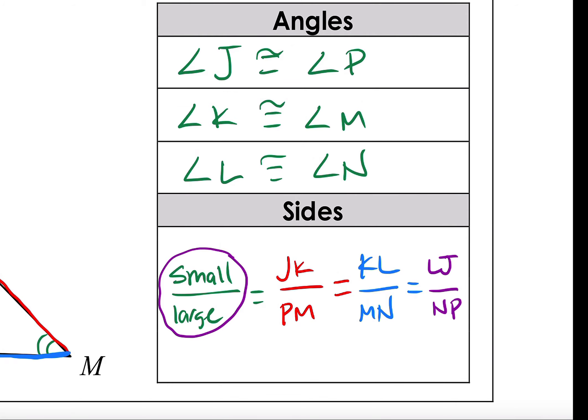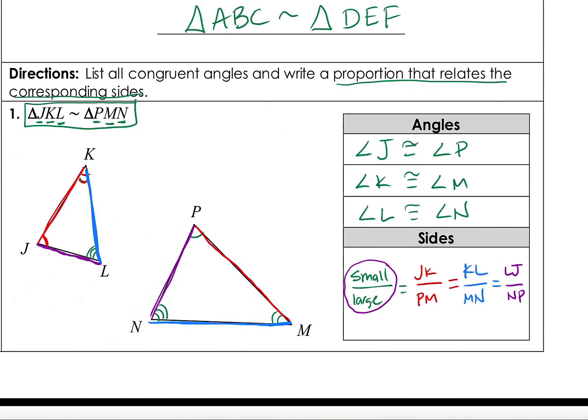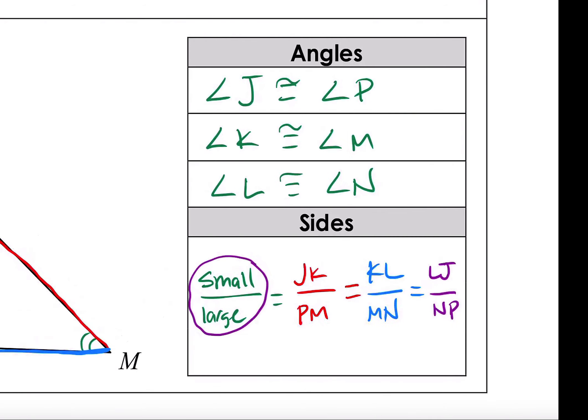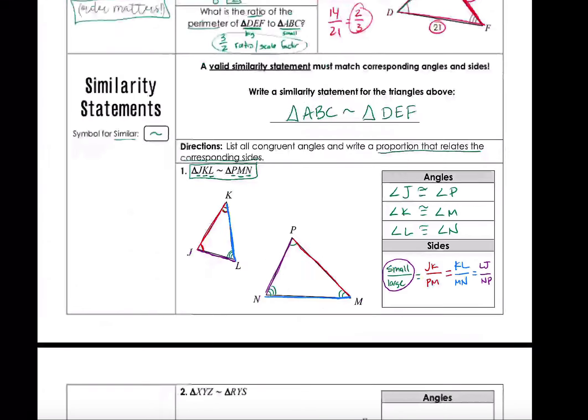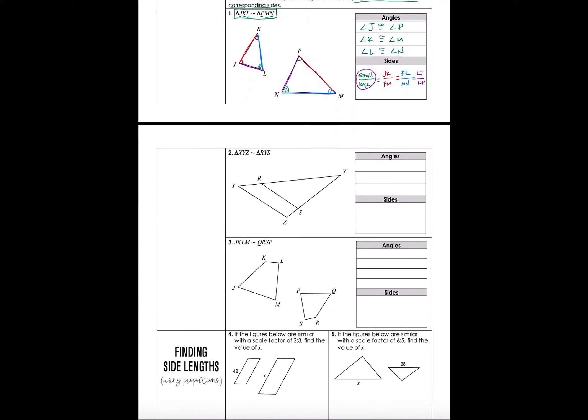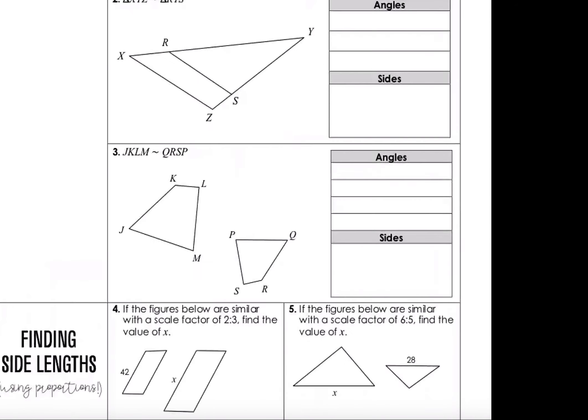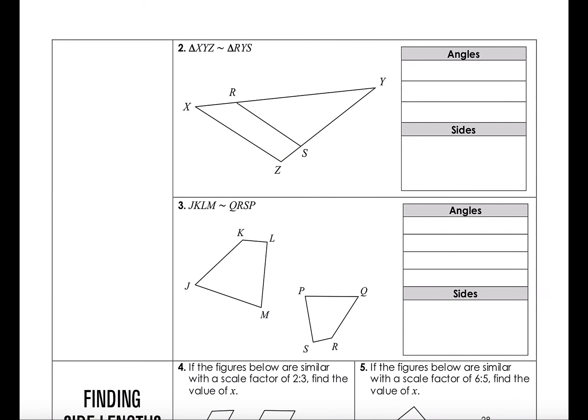The full proportion is: JK over PM equals KL over MN equals LJ over NP. So we write ratios of corresponding sides — small triangle in the numerator, large triangle in the denominator. Go ahead and try problems two and three on your own, and in the next video I'll go over them and also talk about finding side lengths.